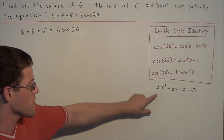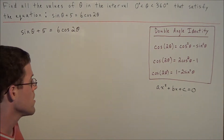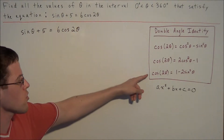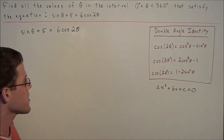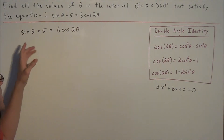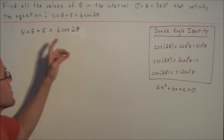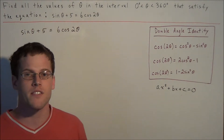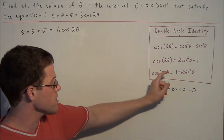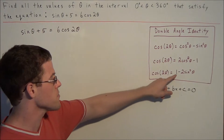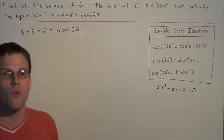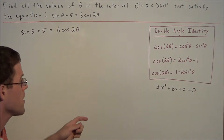Once we get the equation in quadratic form, we can proceed. We're going to use the identity cosine 2θ = 1 − 2 sin²θ, because we have sine theta in the equation and we can't substitute for sine theta with the other identities. We want the same trigonometric function throughout the entire equation. This is the only double angle identity that uses strictly sine; the others use cosine or both cosine and sine.